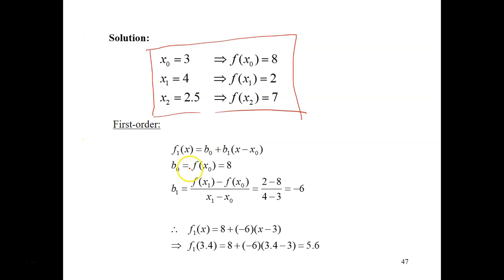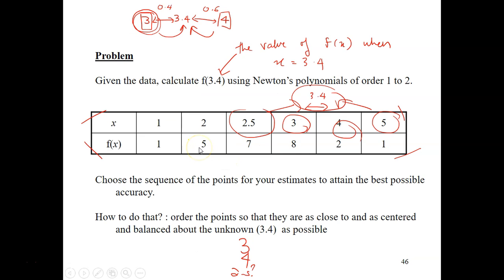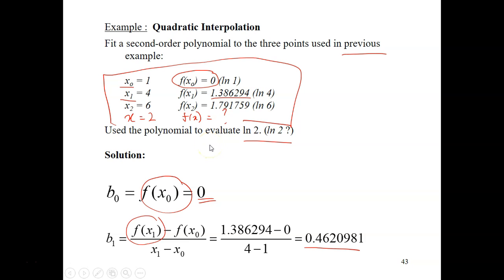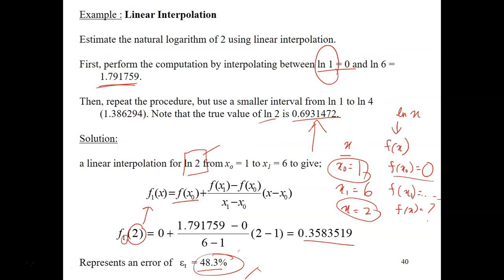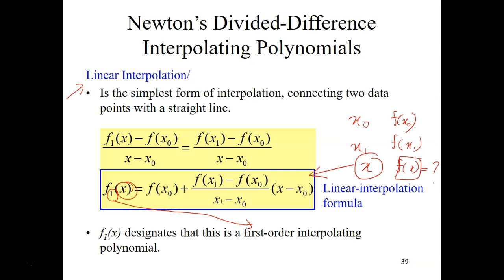For the first order interpolation, this is the formula that we will be using. If you still remember what is B1, let me just show you it again. This is the formula for B1: fx1 minus fx0 divided by x1 minus x0. If you look at the linear equation again, the linear interpolation, which is this one.